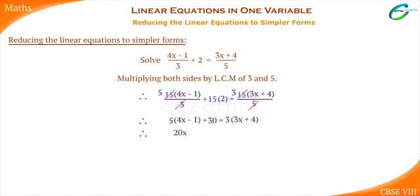Now, simplify by opening the brackets. So, we get 20x plus 25 equals to 9x plus 12.